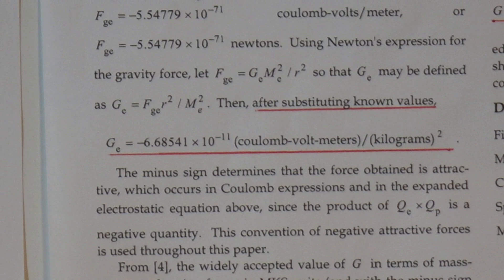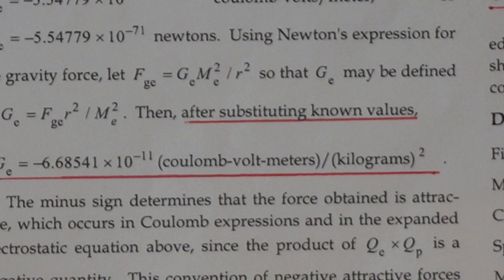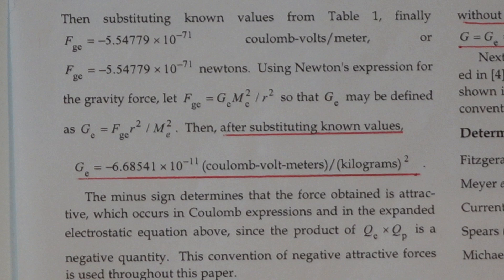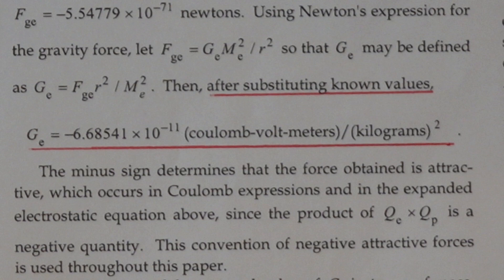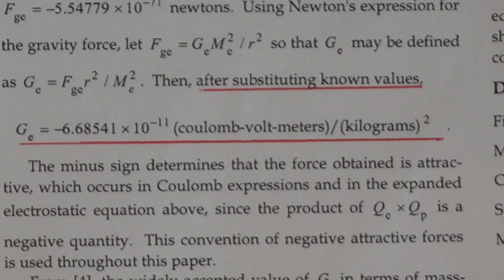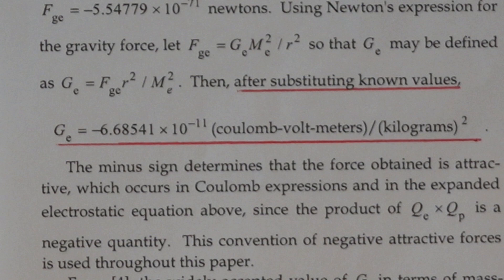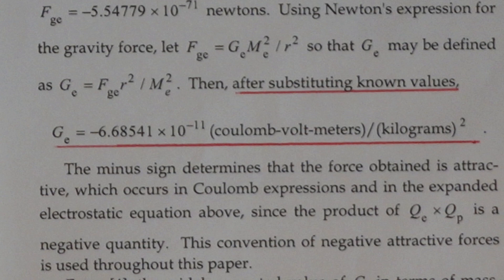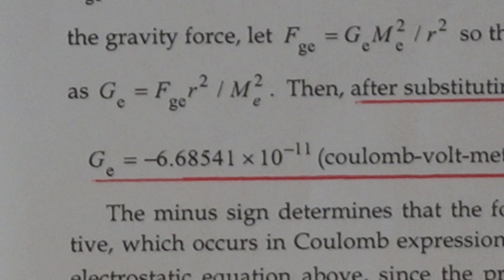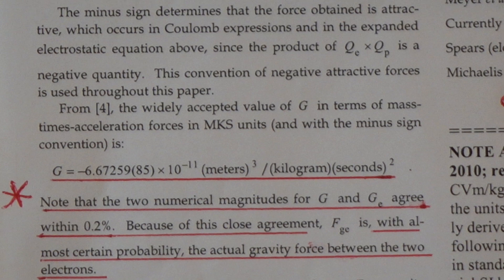This is where we can start finding errors. Up near the top, he's talking about defining some forces, and after substituting known values into his force equations, he finds that the gravitational constant he derived — which he calls G sub E — has this value: 6.6854. That should be an immediate red flag.